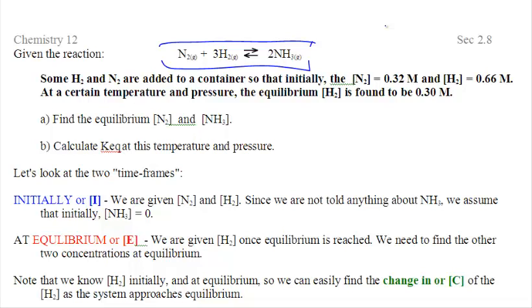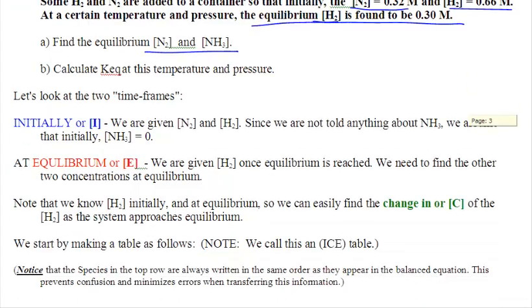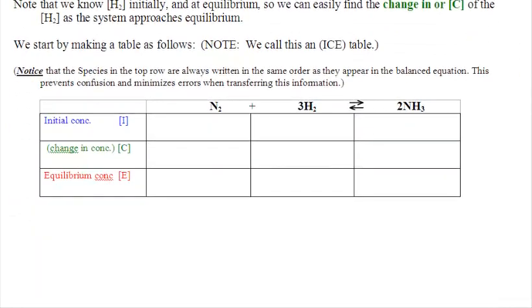The question we're going to be looking at is this one right here. It's dramatically different than the first one. We are given initial data. It says initially N2 is 0.32 and H2 is 0.66. What we want to find is the concentration of H2, use the concentration of H2 at equilibrium to find the rest of the gases at equilibrium and the KEQ. So you have to sort out this information into initial and equilibrium. We're going to put it in something called an ice table.